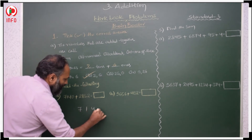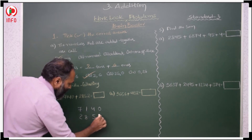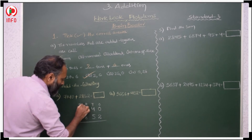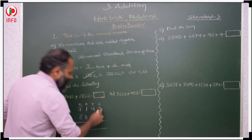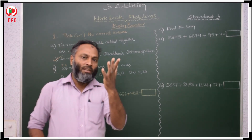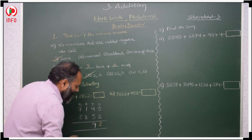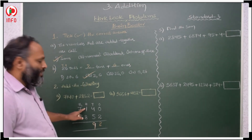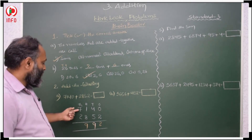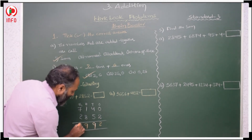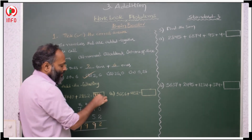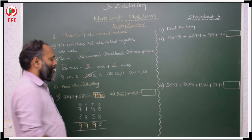First brain booster: 7140 plus 2852. This is 1's place, 10's, 100's and 1000's. Adding: 0 plus 2 is 2. 4 plus 5 is 9 — single digit, no need to regroup. 8 plus 1 is 9 — no need to regroup. 7 plus 2 is 9 — no need to regroup. Answer: 9,992.